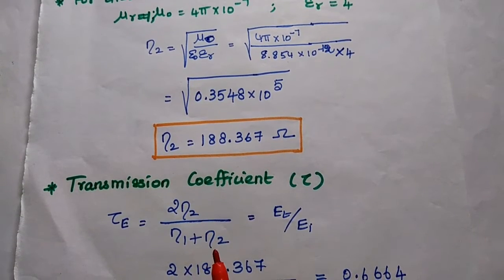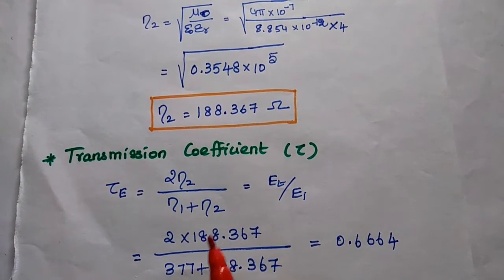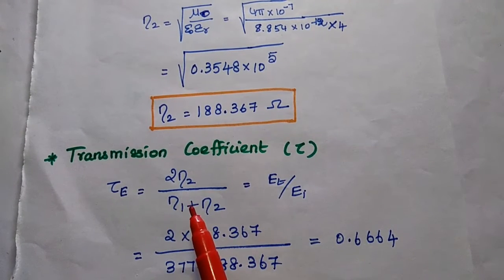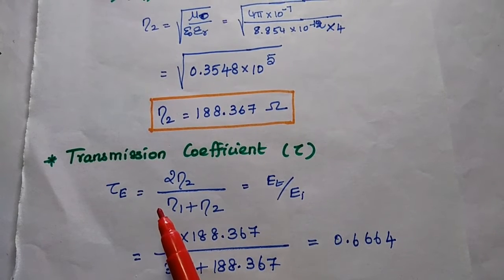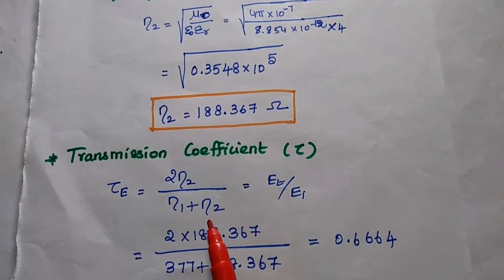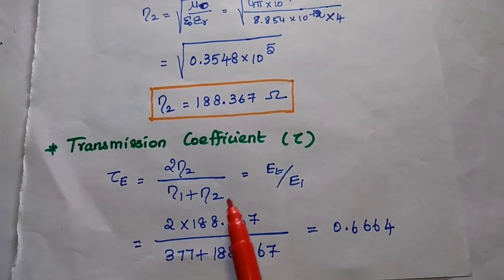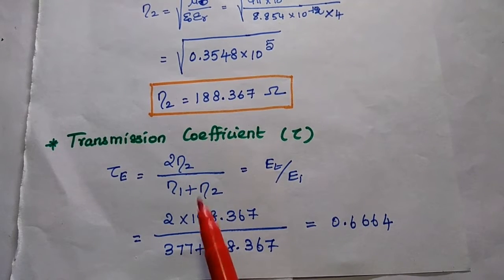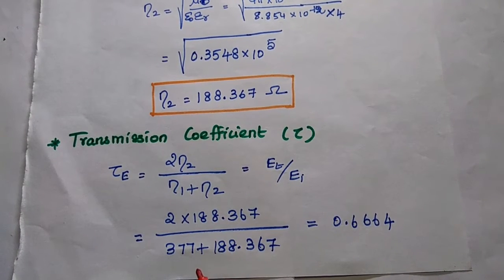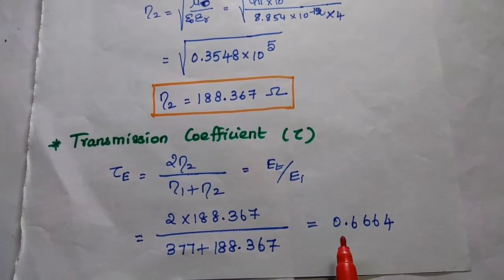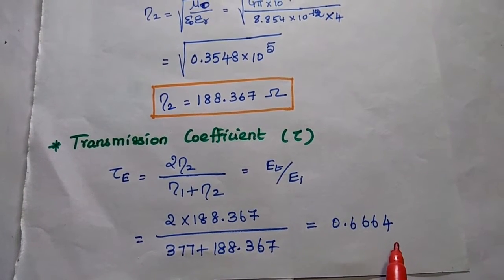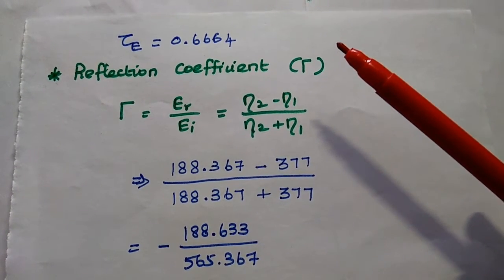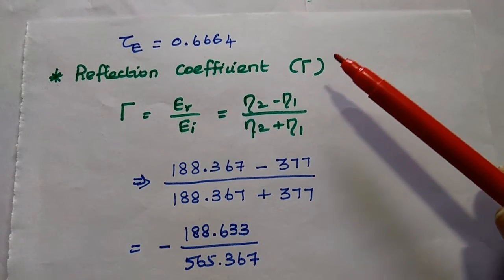Now we have obtained eta 1 and eta 2. Next we find the transmission coefficient. The formula is tau E equal to 2 eta 2 by eta 1 plus eta 2, which can also be represented as ET by EI. Substituting eta 1 and eta 2 values, we get the answer 0.6664. So the transmission coefficient tau E is equal to 0.6664.